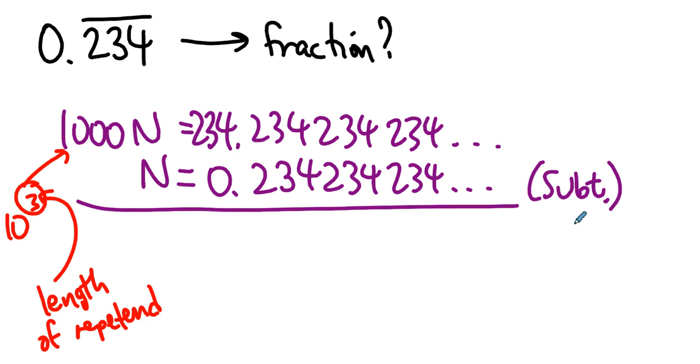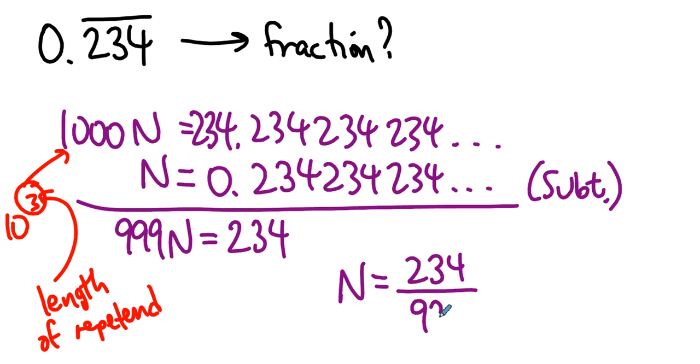Guess what happens? What happens on this side? That's right. And now figuring out what n is, is a piece of cake. 234 over 999, which happens to reduce to 78 over 333.